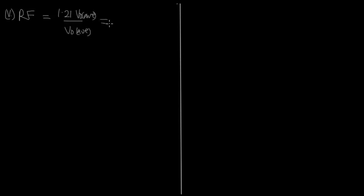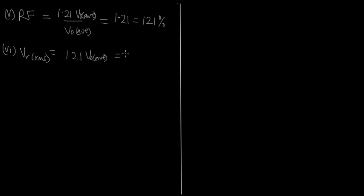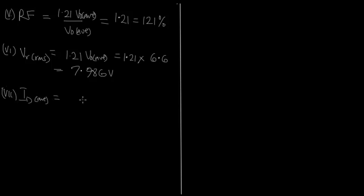Next, the ripple factor equals 1.21, or 121 percent. The RMS ripple voltage VR RMS equals 1.21 times V_out average, which is 1.21 times 6.6, equal to 7.986 volts.